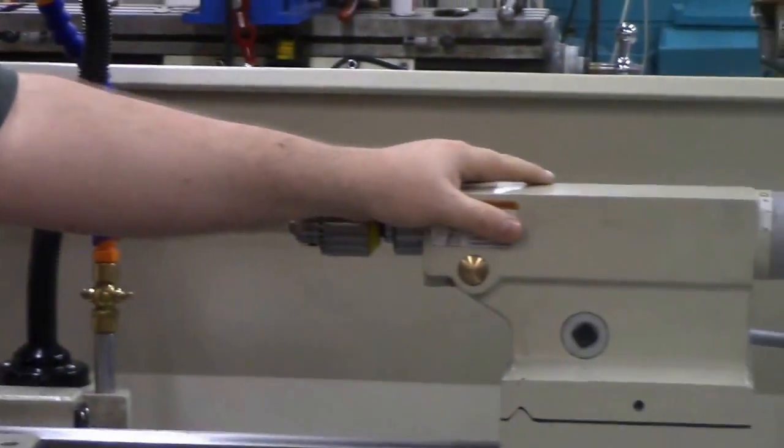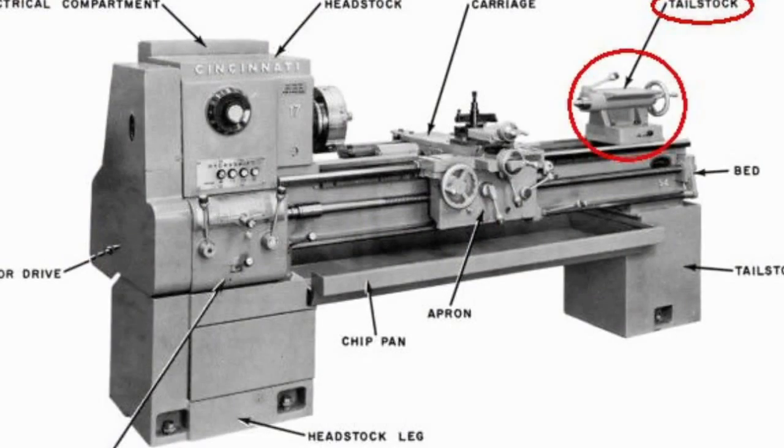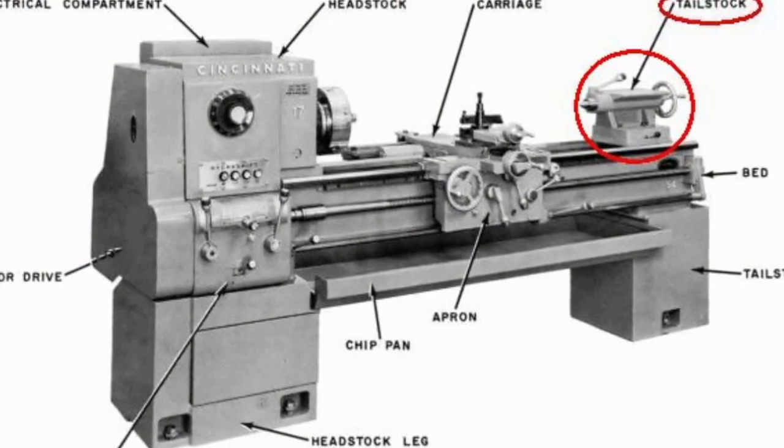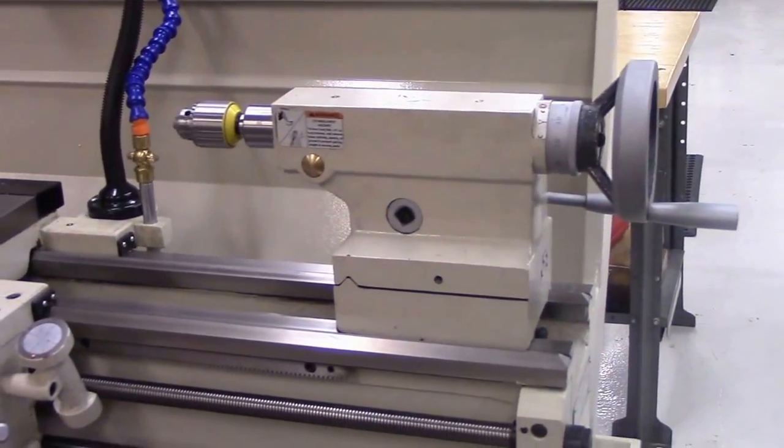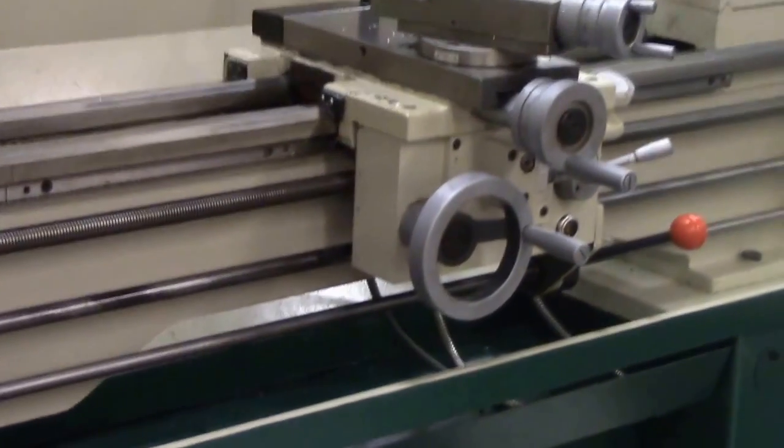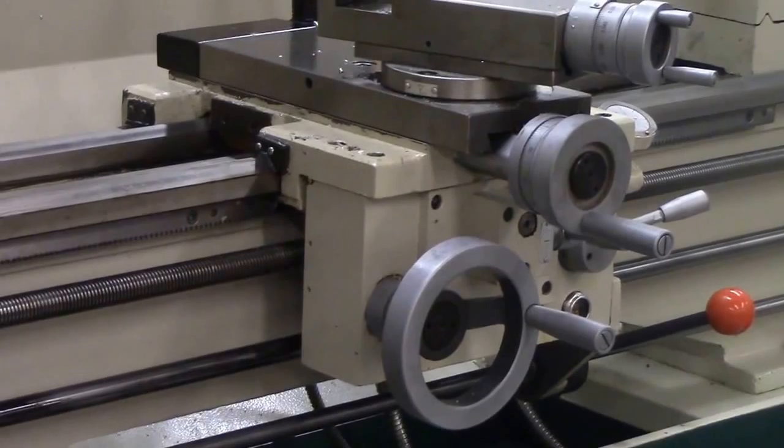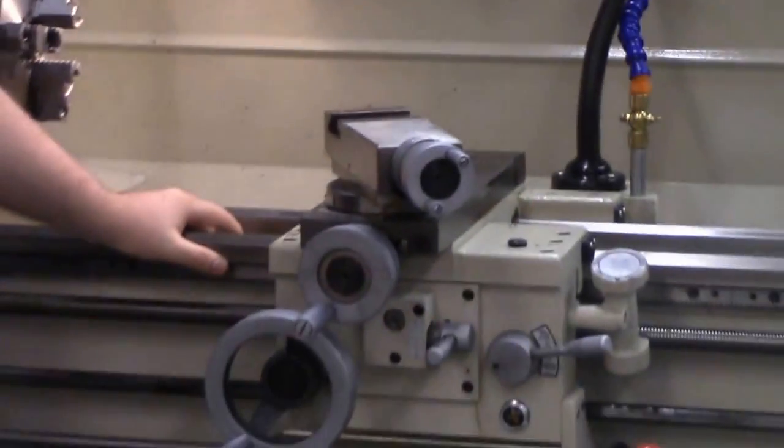To the right side here, you'll see we have the tailstock. You can remember the tailstock because the tailstock holds your tool. Tailstock with tool, your head holds your piece. Then thirdly, we have your carriage, and finally, we have the bed here.